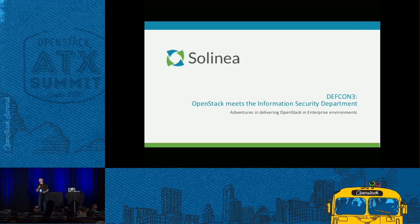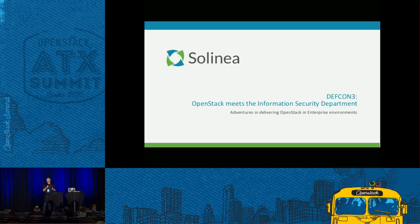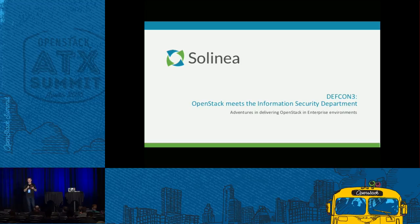What I'm going to talk about today is basically recurring themes or problems that we have encountered when deploying OpenStack into enterprises. These are issues that may be familiar to you, or may be new, but they're not necessarily going to be issues that arise in a model greenfield implementation. These are issues that arise in real OpenStack deployments where you have a legacy information security department.